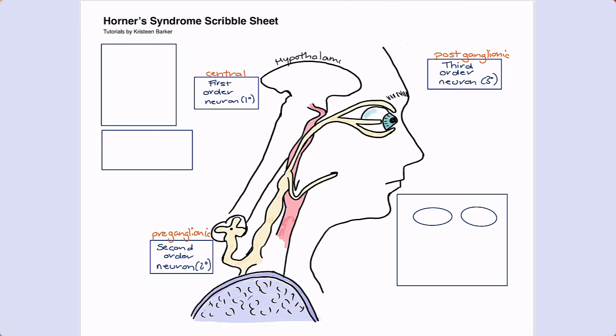The first-order neuron starts in the hypothalamus and descends down through the brainstem, synapsing in the spinal cord at the level of C8 to T2.